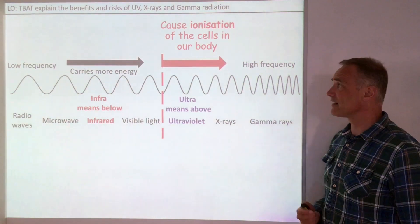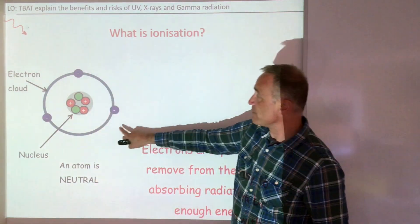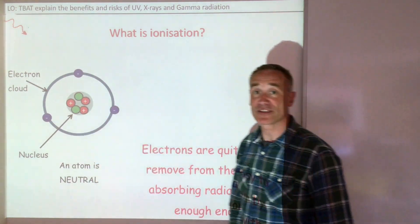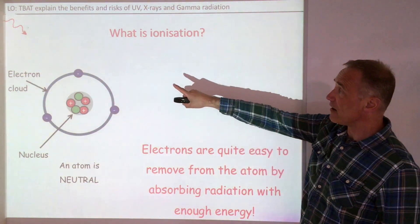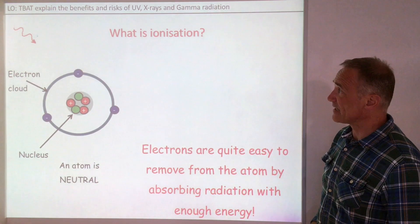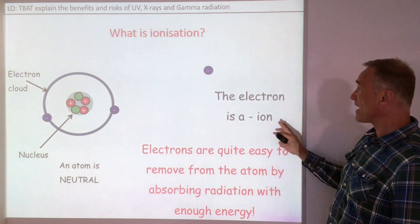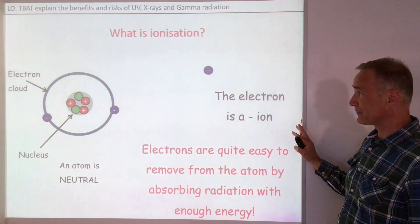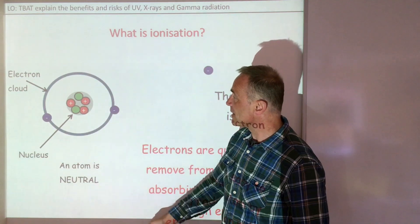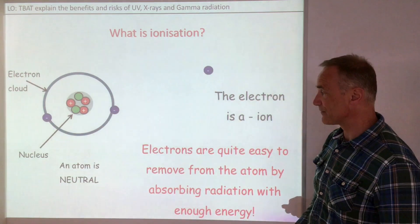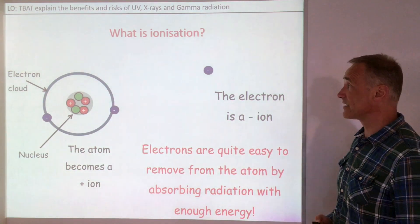So what is ionization? Well here we have a neutral atom. We've got three negative electrons and three positive protons cancelling each other out. Here comes our radiation and as it comes in, it's got enough energy to knock out an electron. So we've now got a negative electron and also a positive ion because we've got three positives and two negatives. So we have ionized the atom — that's what ionization is.